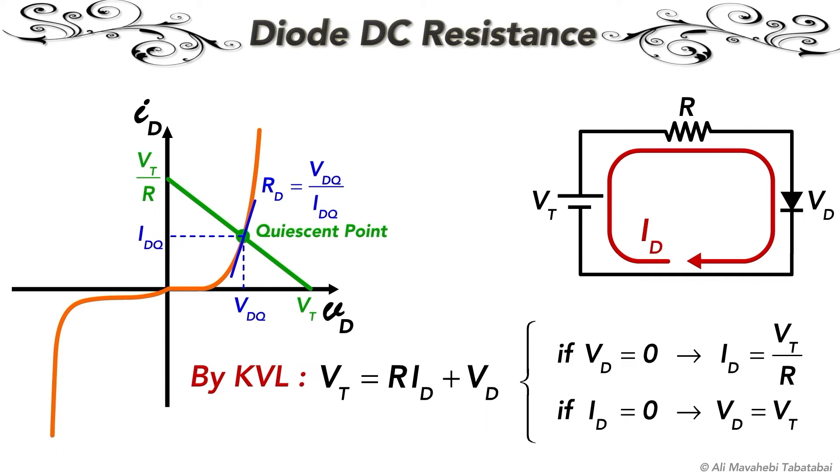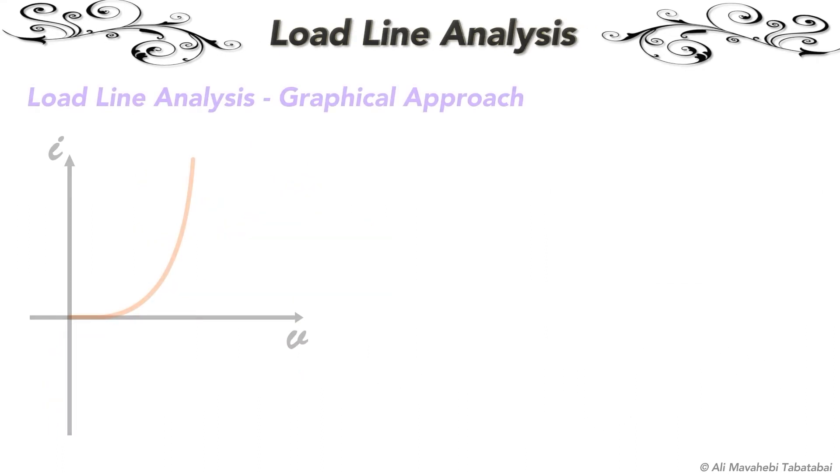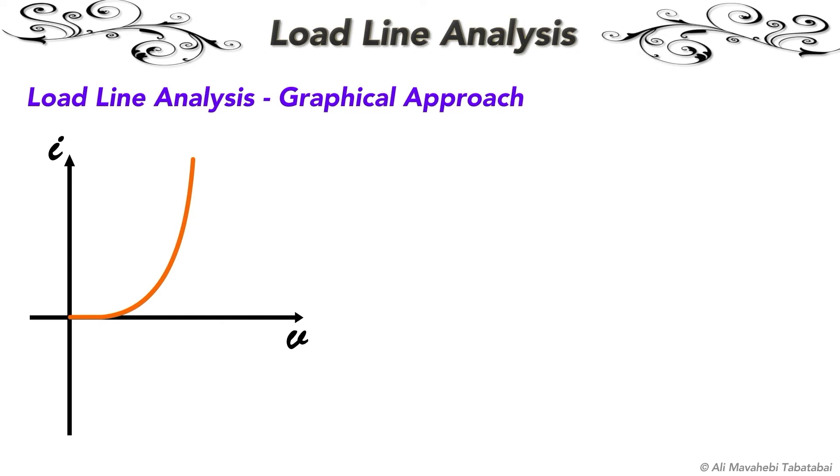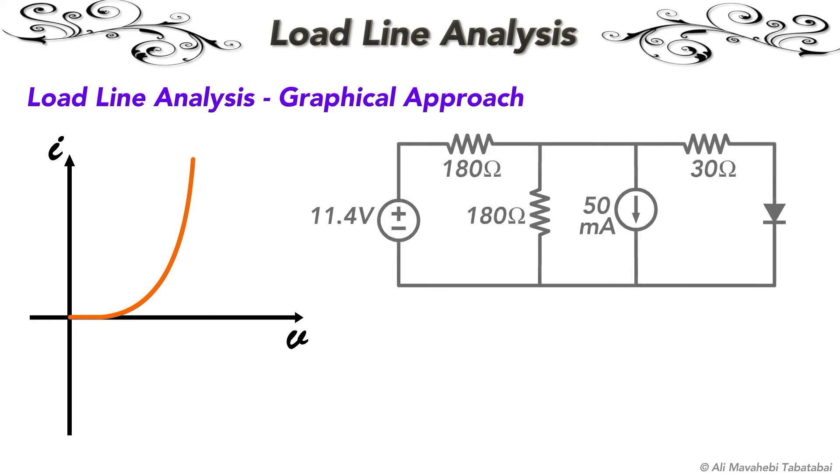The first method for finding the operating point current and voltage is load line analysis. This method is used when you have only one nonlinear element like a diode in your circuit. Imagine you have a linear circuit consisting of linear resistors and sources connected to a nonlinear diode.